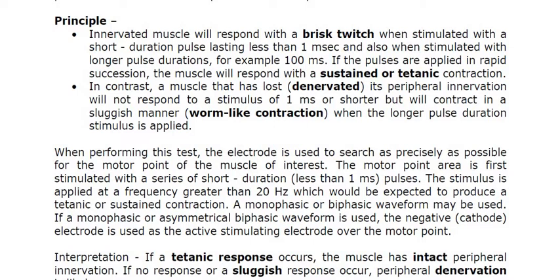These two contractions — brisk twitch and titanic contraction — are generally seen in a normal muscle that is properly innervated. When we say innervated, we mean the nerve supply of a muscle is intact. If a muscle is innervated, it will always show brisk twitch or titanic contraction depending upon the stimulation. The third type of contraction is abnormal — it is not seen in normal muscles, only in muscles which are denervated.